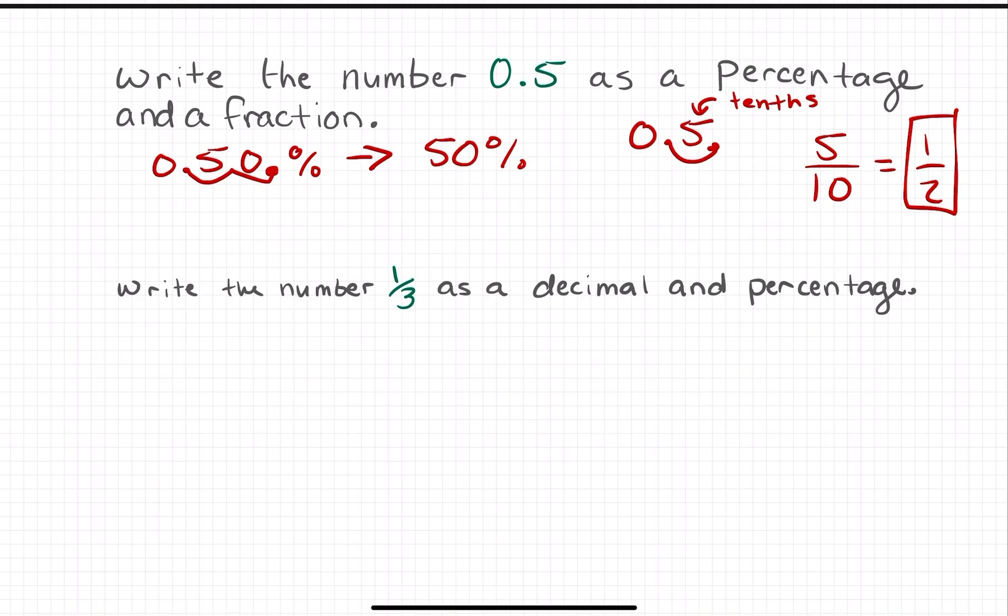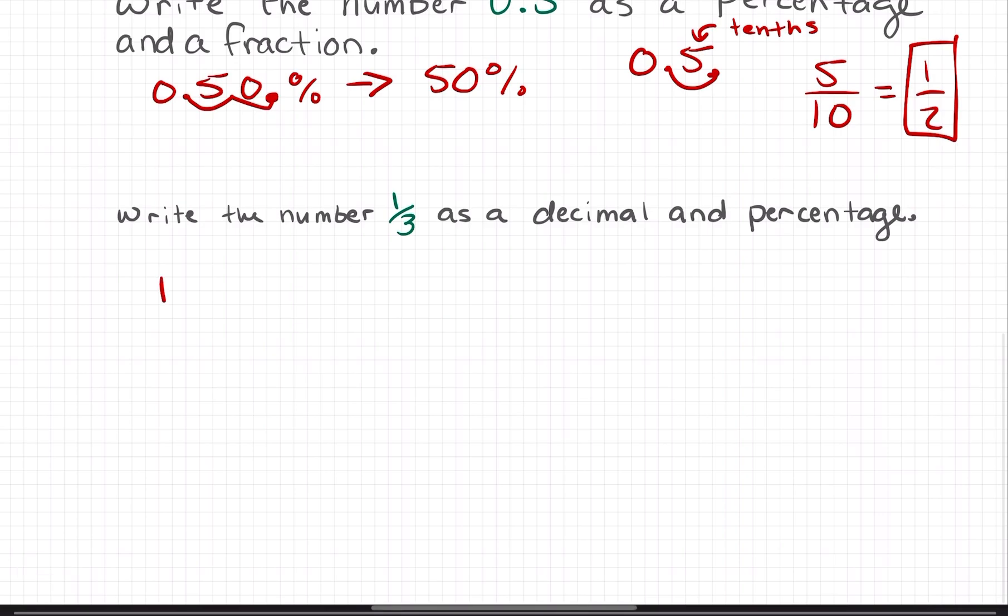I'll take my numerator, which is 1, and divide it by 3. Three doesn't go into one, so I'll put a zero here and place a decimal right there. Three times zero is zero. Subtract zero from one, I get one. Put a zero as a placeholder and bring it down. Three goes into 10 three times, and 3 times 3 is 9. Now we're going into this infinite loop of threes.